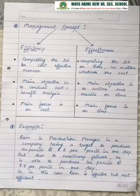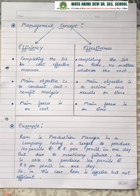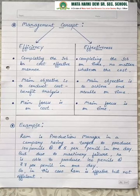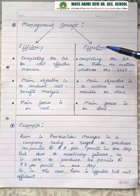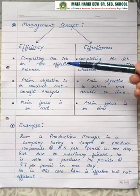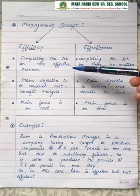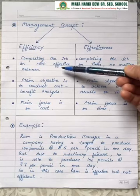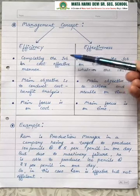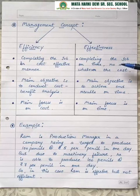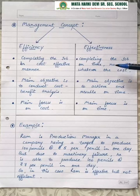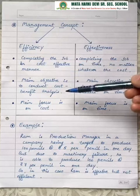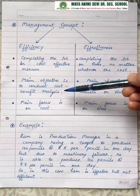Our next topic is the management concept. Management concept comprises two elements: one is known as efficiency and the other is known as effectiveness. Efficiency means completing a job or task in a cost-effective manner. Effectiveness means completing a job or work on time, no matter whatever the cost is. In efficiency, the main objective is to do a cost-benefit analysis — you have 2-3 options and you choose according to the cost.